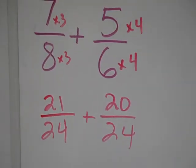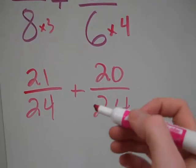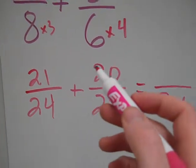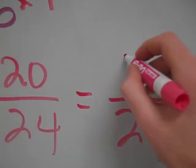So now I have like denominators, and now I can actually add them. So I'm going to keep my denominators the same, obviously. 21 plus 20 is 41.